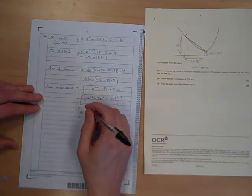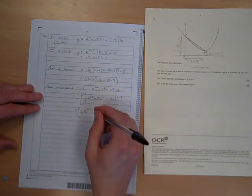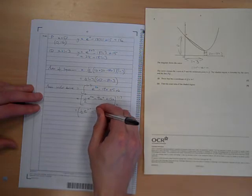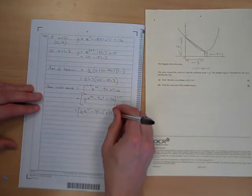Which is 1 half e to the 2ln3, so ln9 minus 9 times natural log of 3 squared plus 15ln3.